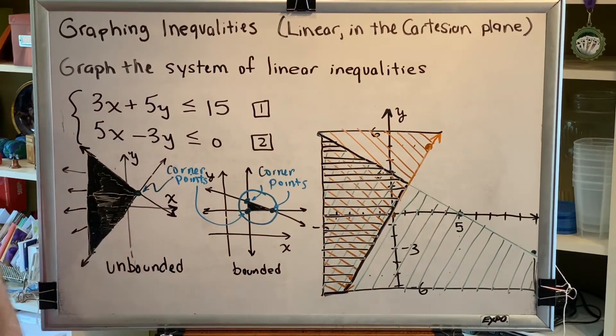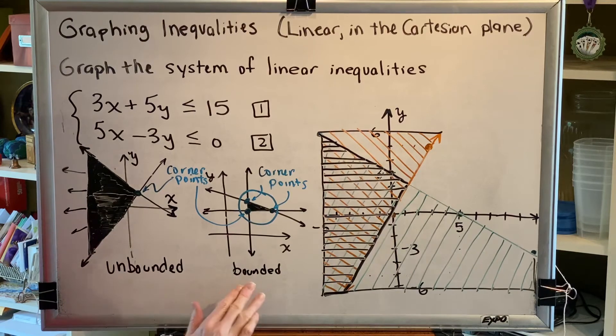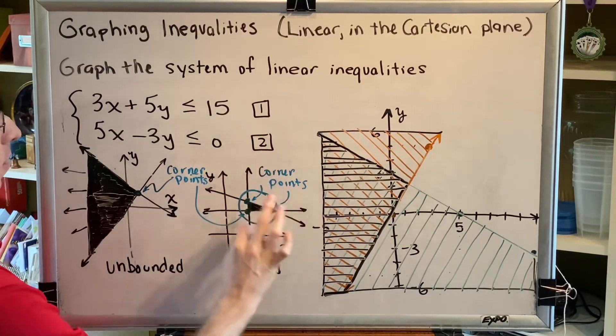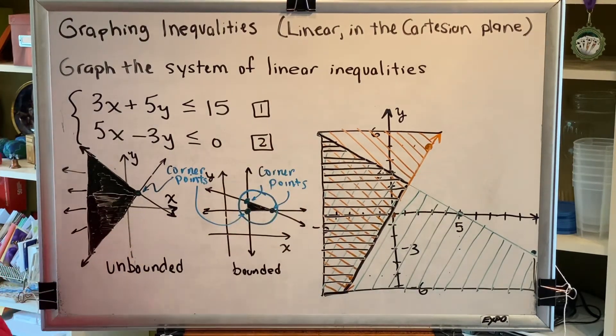So unbounded goes forever to infinity in at least one direction. Bounded means it is limited, and therefore you can draw a circle around it.